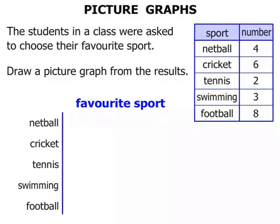Now let's start with Netball. There were four people who chose Netball, so we're drawing a picture graph. To represent four, we draw one, two, three, four smiley faces.